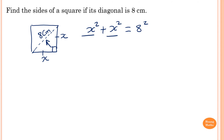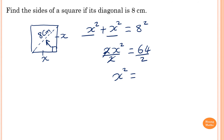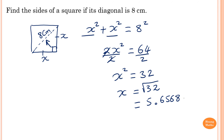We have x squared plus another x squared, giving 2x squared equals 64. Dividing both sides by 2 gives x squared equals 32. So x equals the square root of 32, which equals 5.6568 and so on. Even though the answer doesn't specify how many decimal places, we round to 2 decimal places, so x equals 5.66 centimeters.